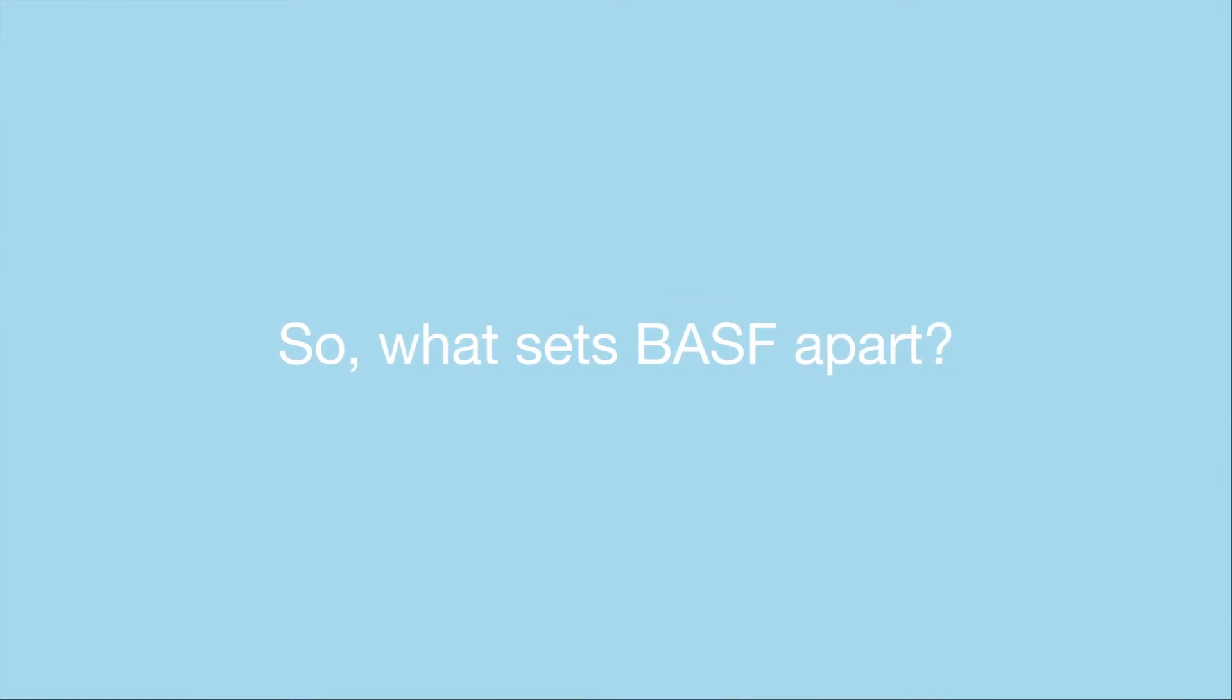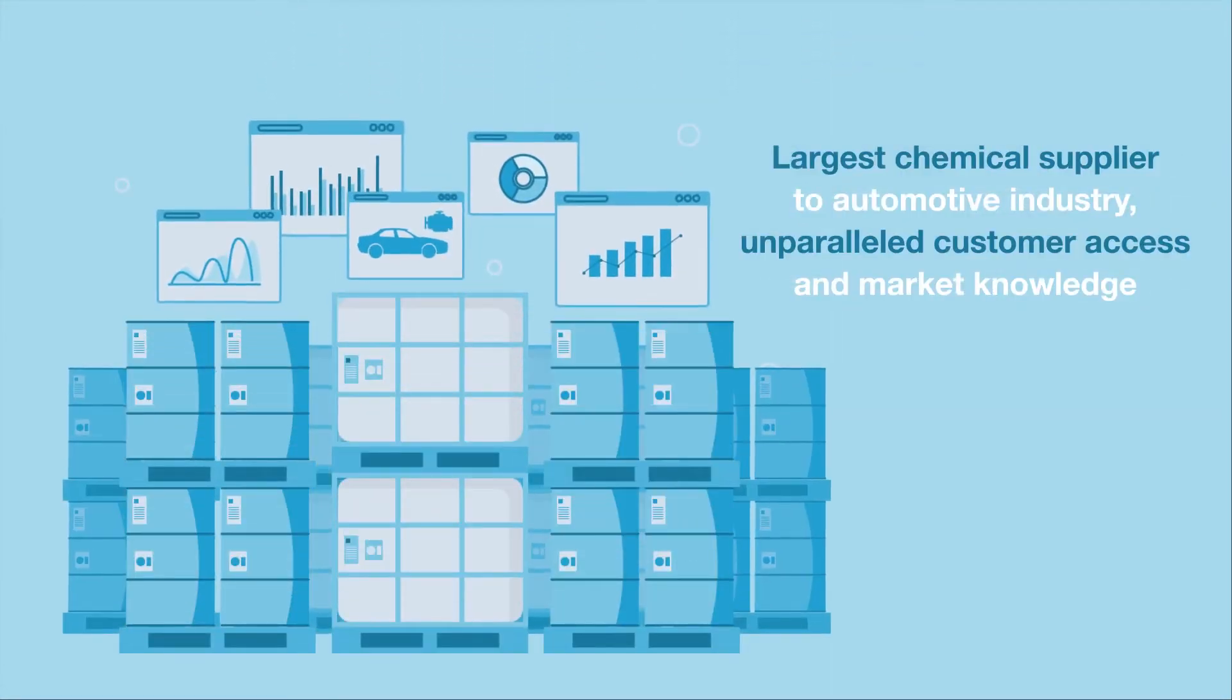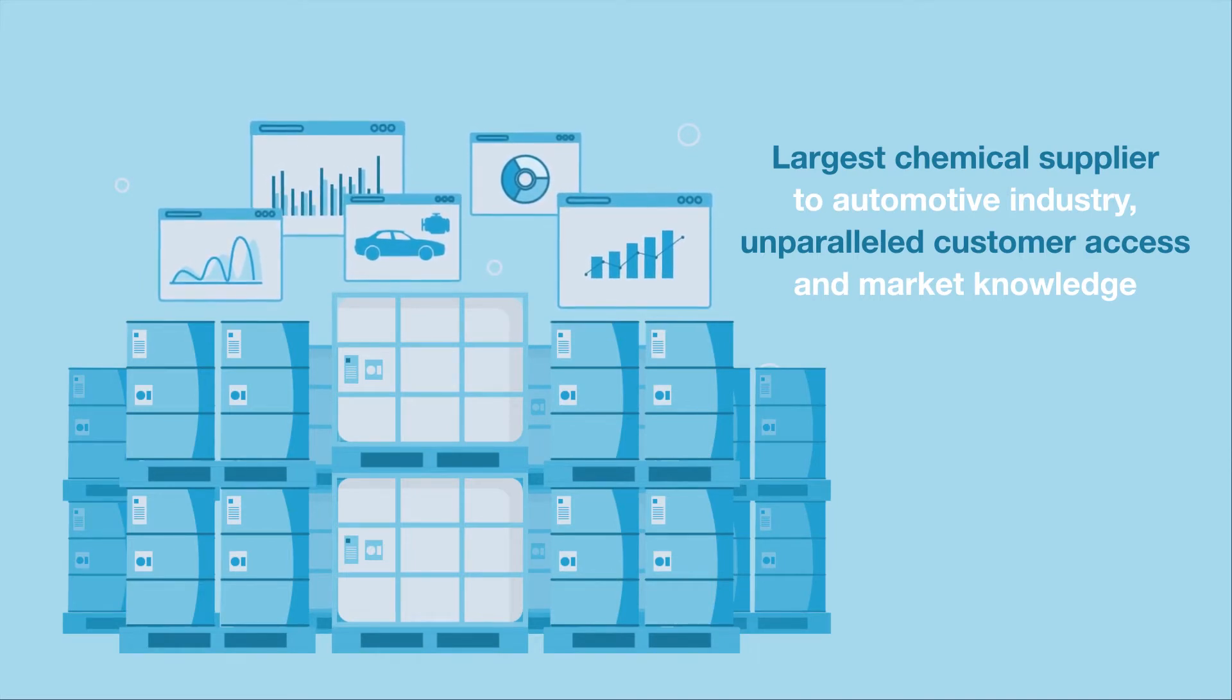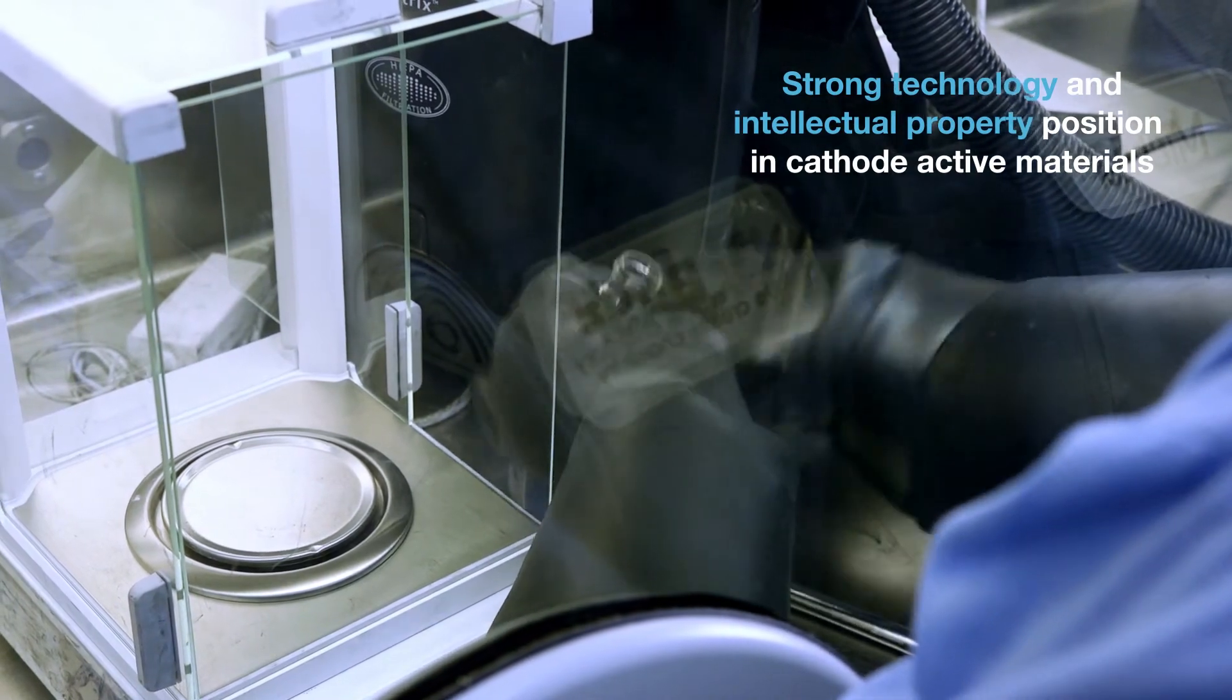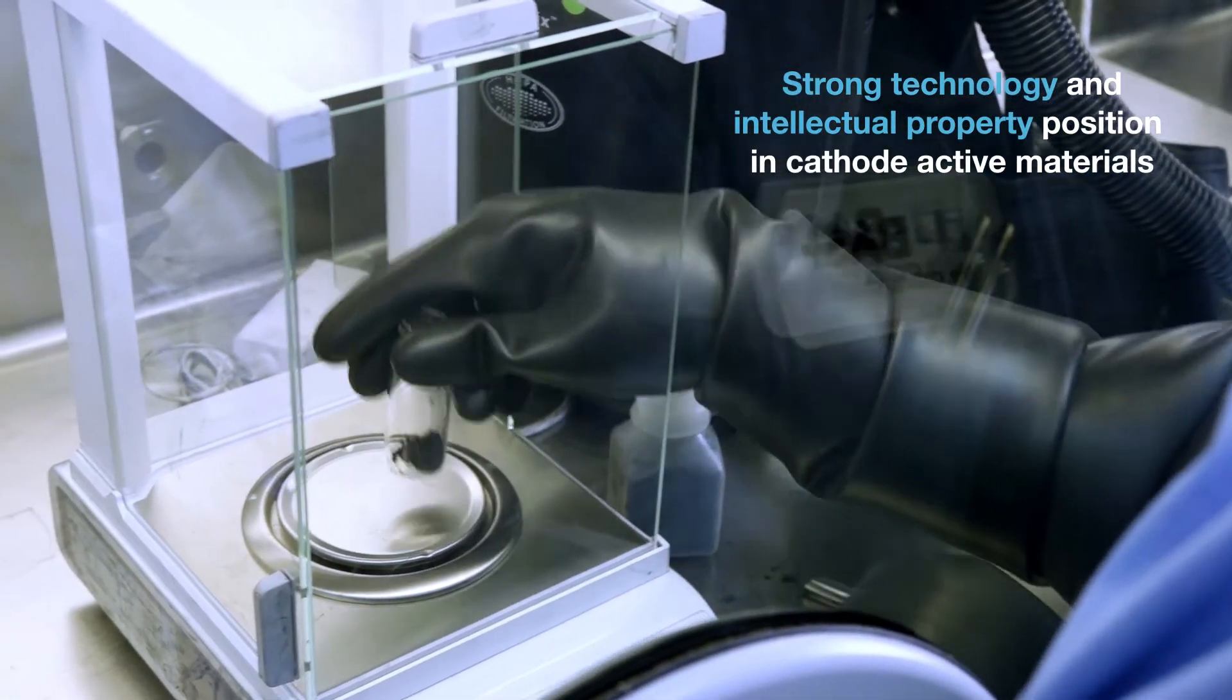So, what sets BASF apart? We're the largest chemical supplier to the automotive industry with unparalleled customer access and market knowledge. We have strong technology and an intellectual property position in cathode active materials.